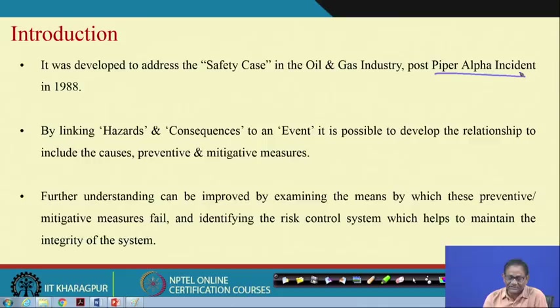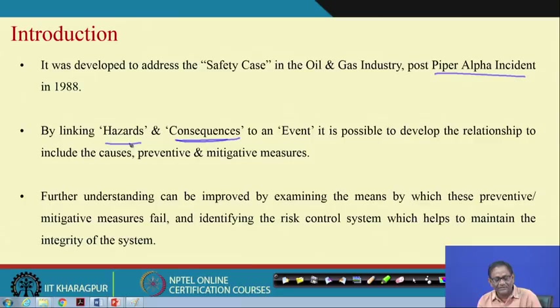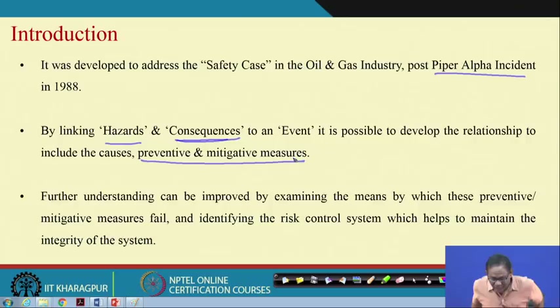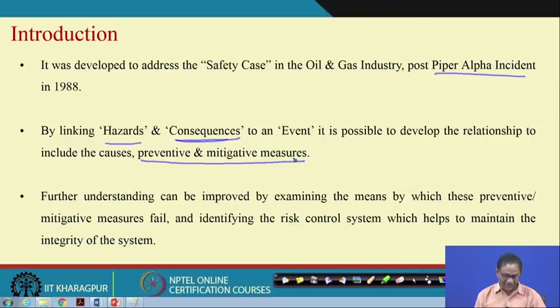The accident scenarios represent the consequences, and the basic event side represents component-level hazards. So we link from hazards to consequences — that means the causes of hazard occurrences and ultimately up to consequences. It captures the total relationship. Another very important aspect is that it talks about the preventive and mitigating measures required along different accident paths. It gives you the total accident path, but it is a very exhaustive one, so it may not be possible to develop for the entire system — perhaps only for safety-critical subsystems.